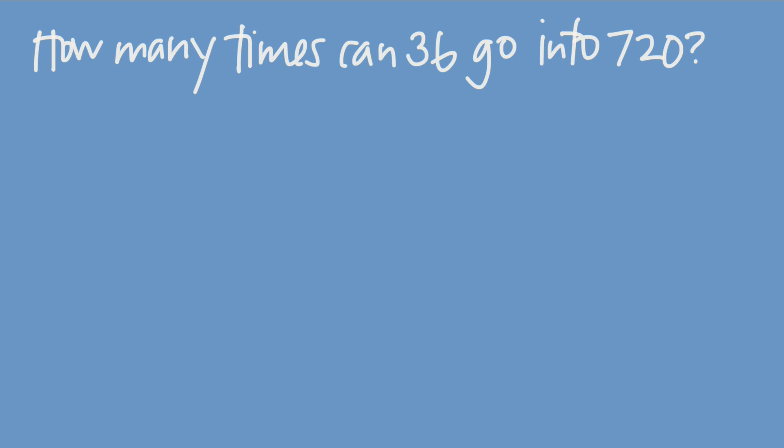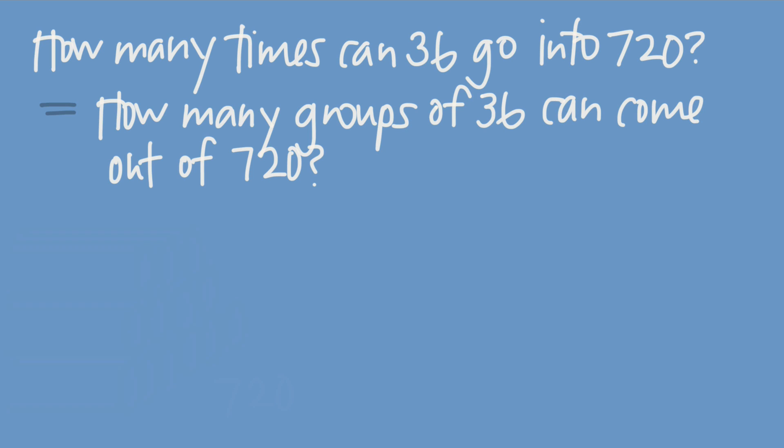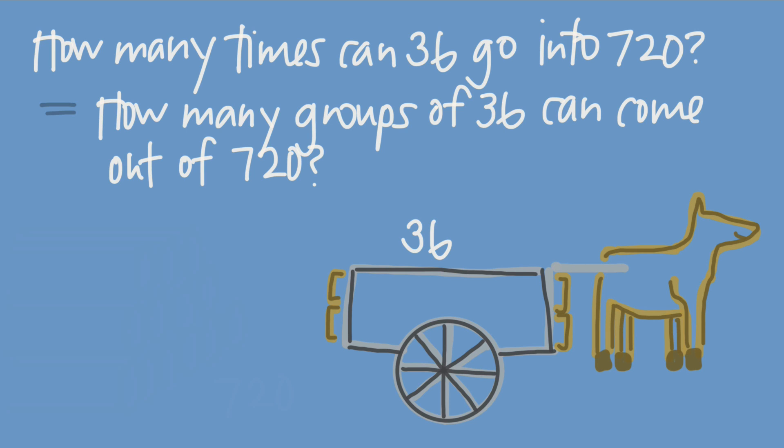The problem was to find out how many times 36 could go into 720. If you think about it, this is the same thing as asking, how many whole groups of 36 can we take away from 720? If we hadn't been around to help the villagers with long division, they might have used a horse drawn cart that could fit exactly 36 logs to drag 36 logs away from the pile of 720, one cart load at a time, in order to solve this problem.